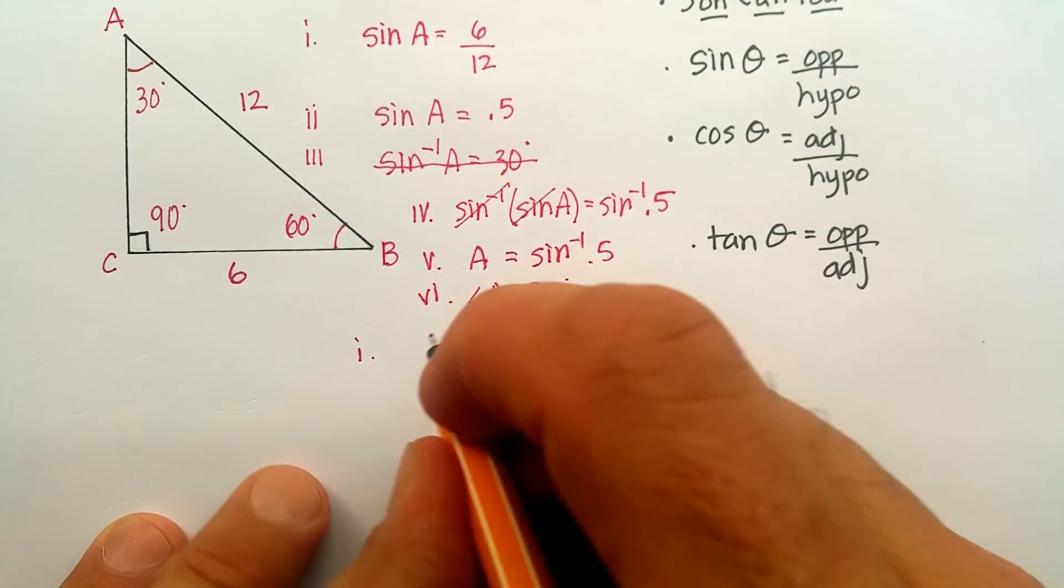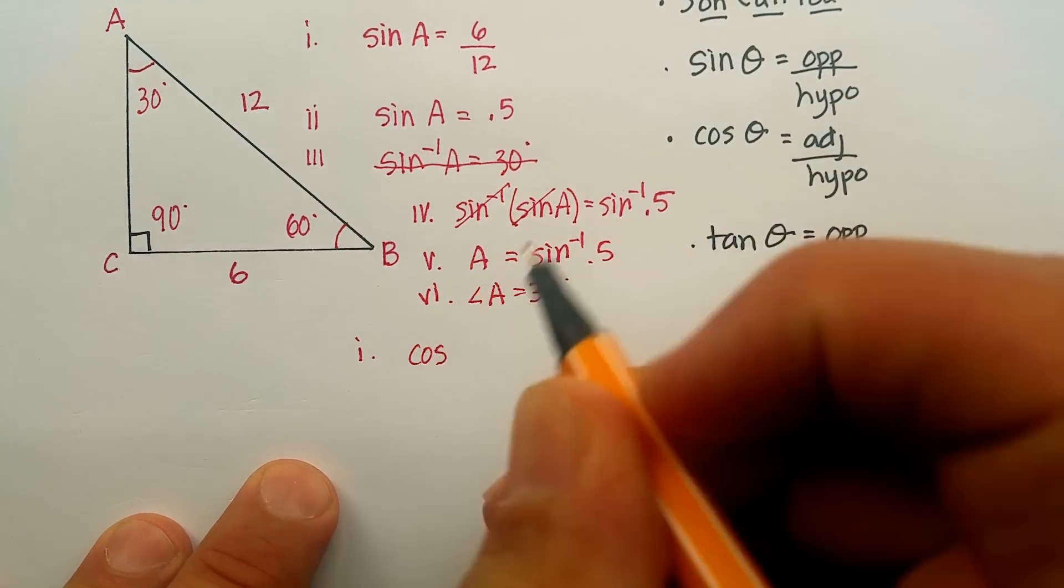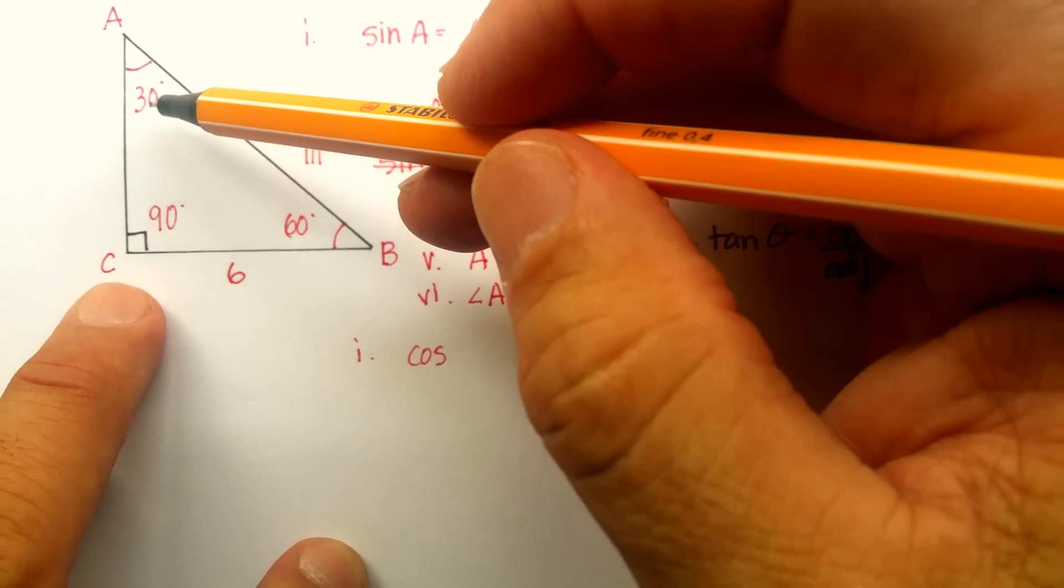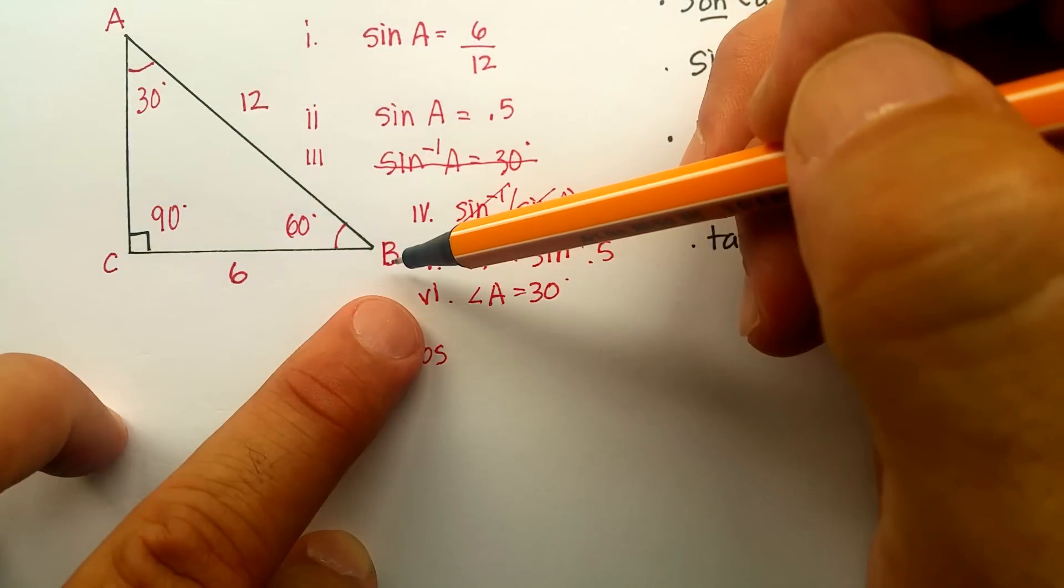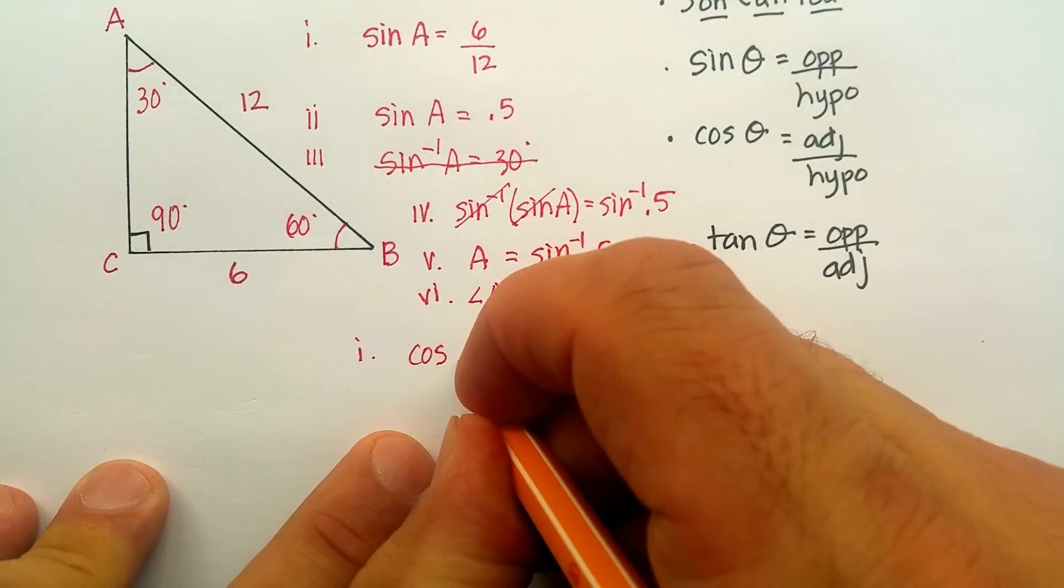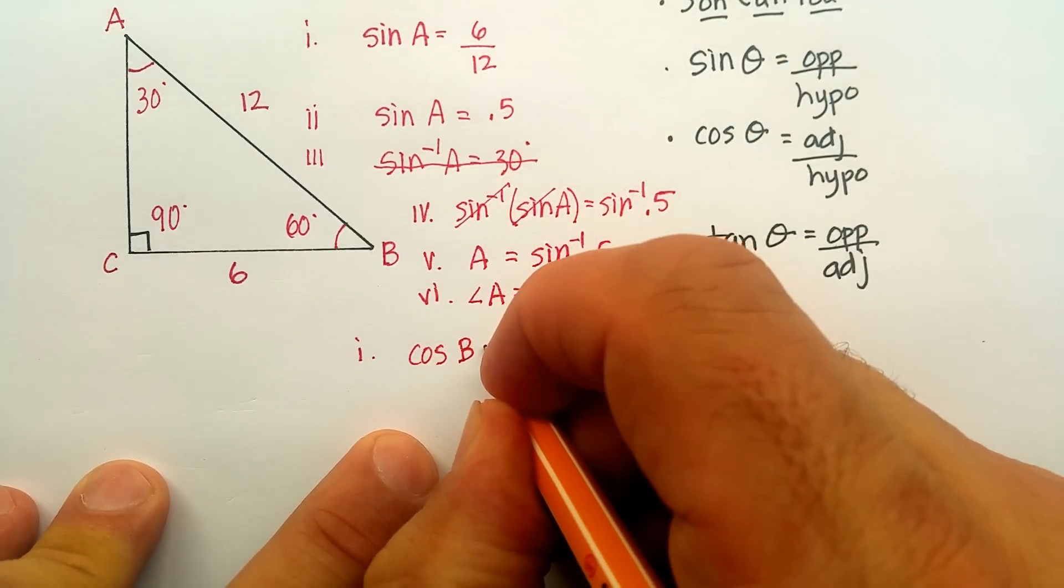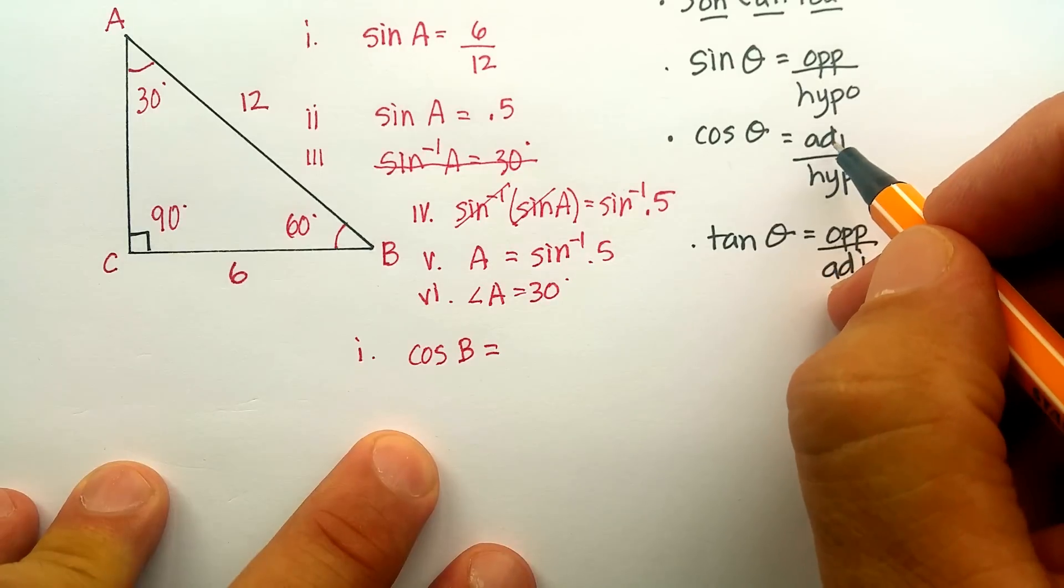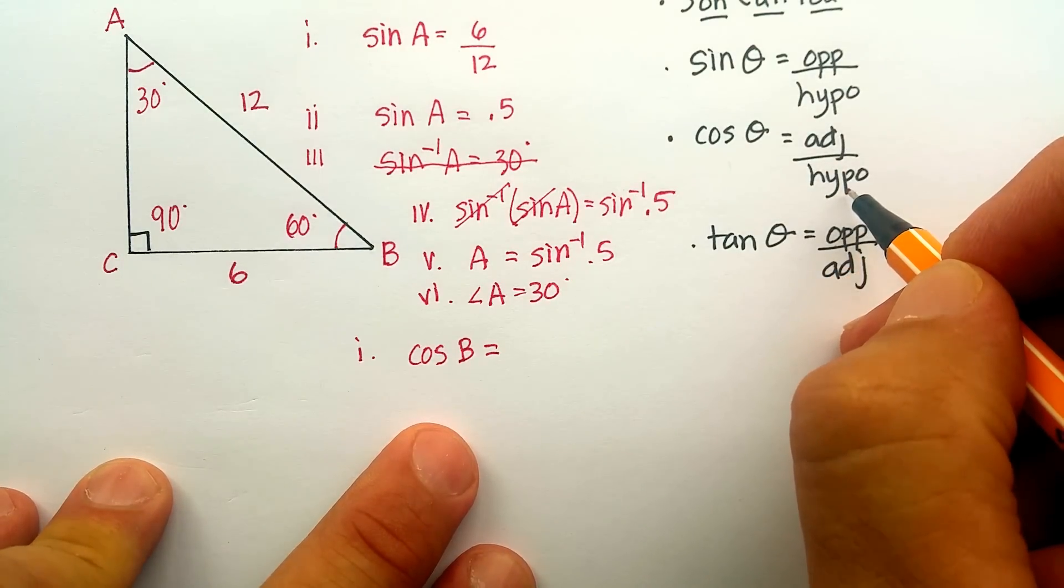So, now, let's use the cosine instead. Let's use the cosine of B, of angle B.